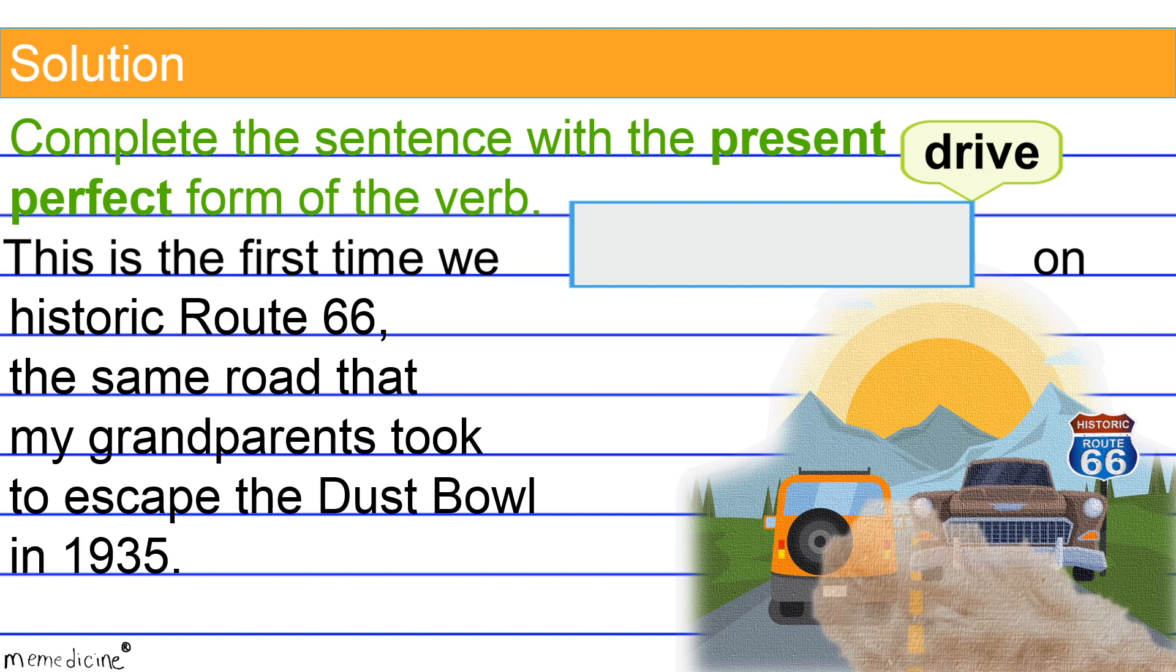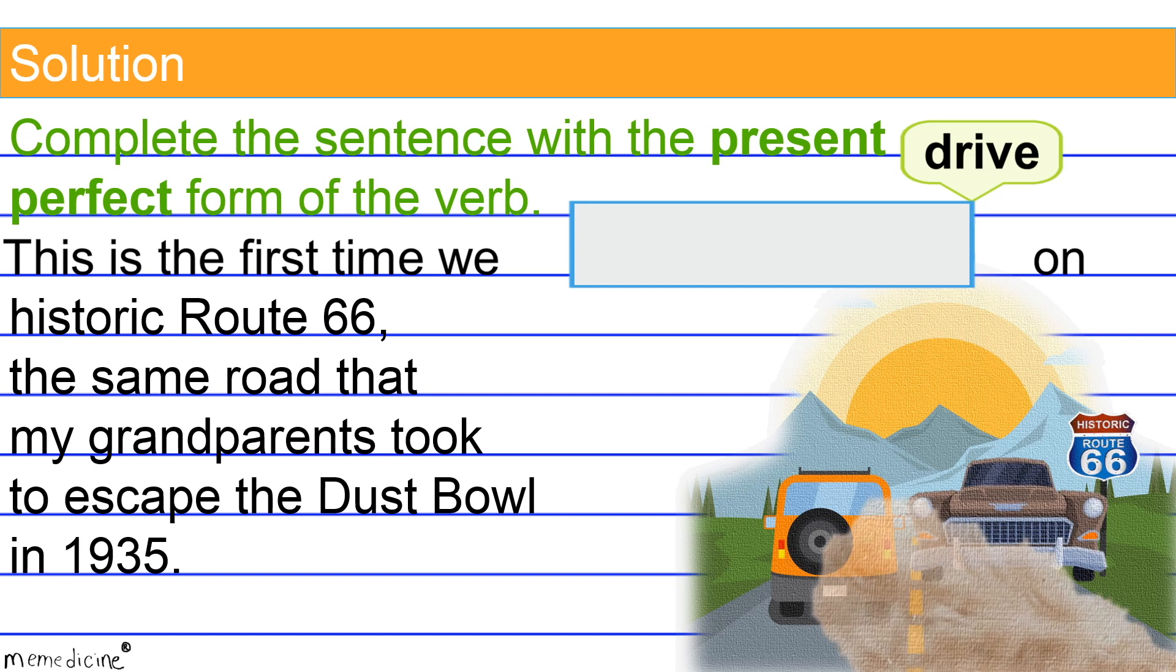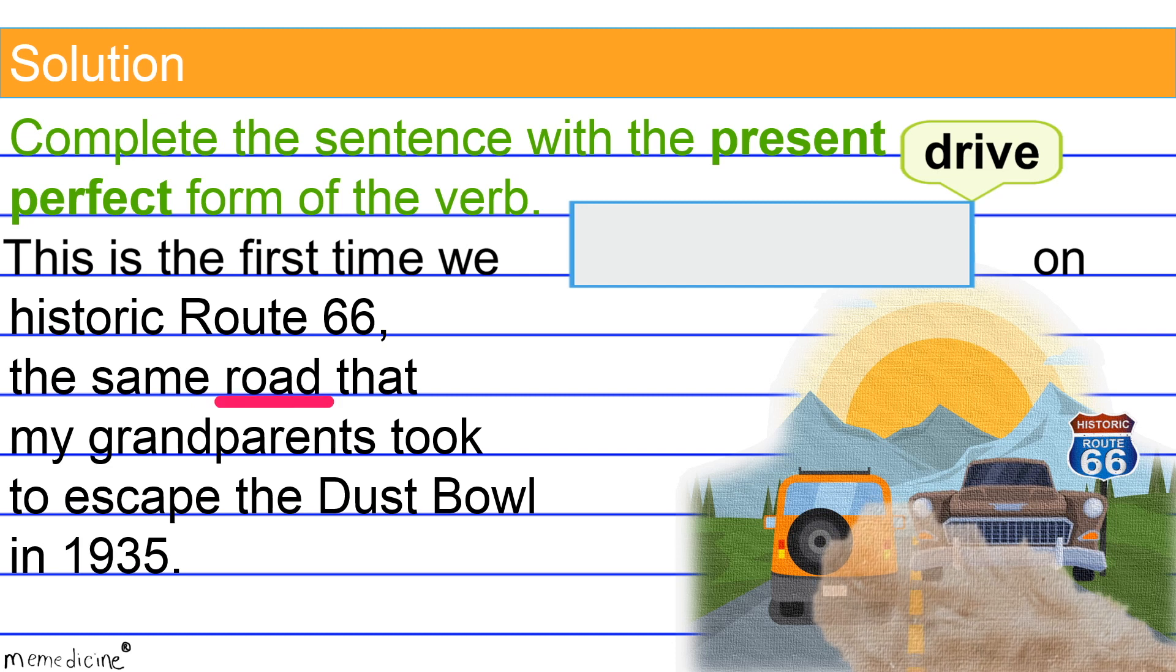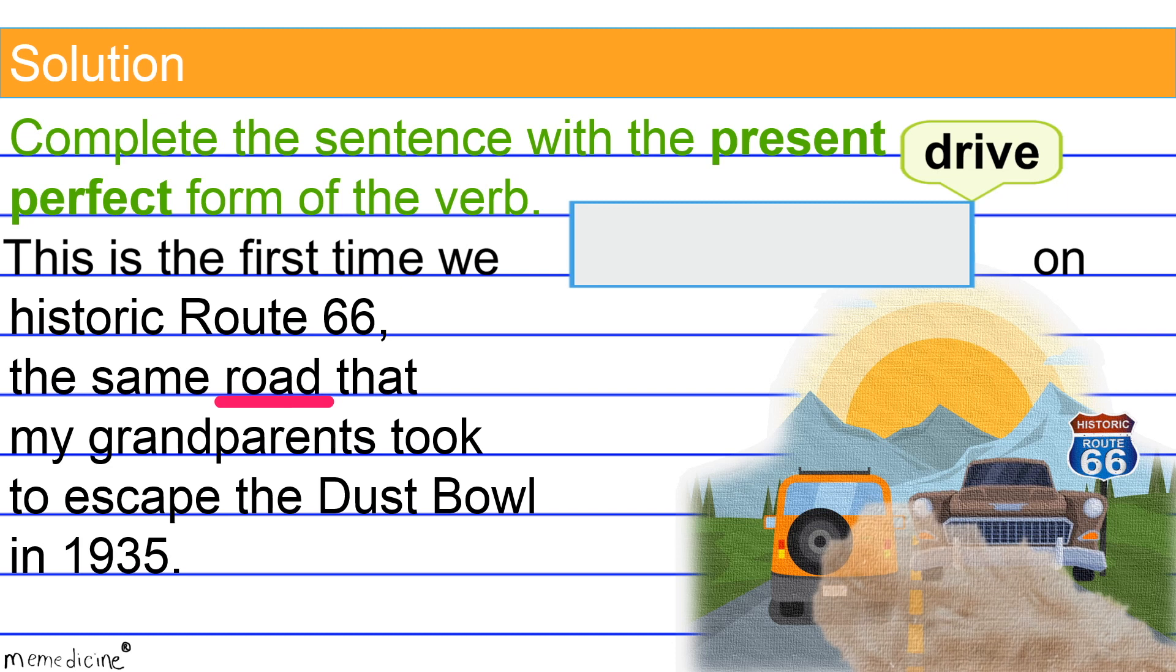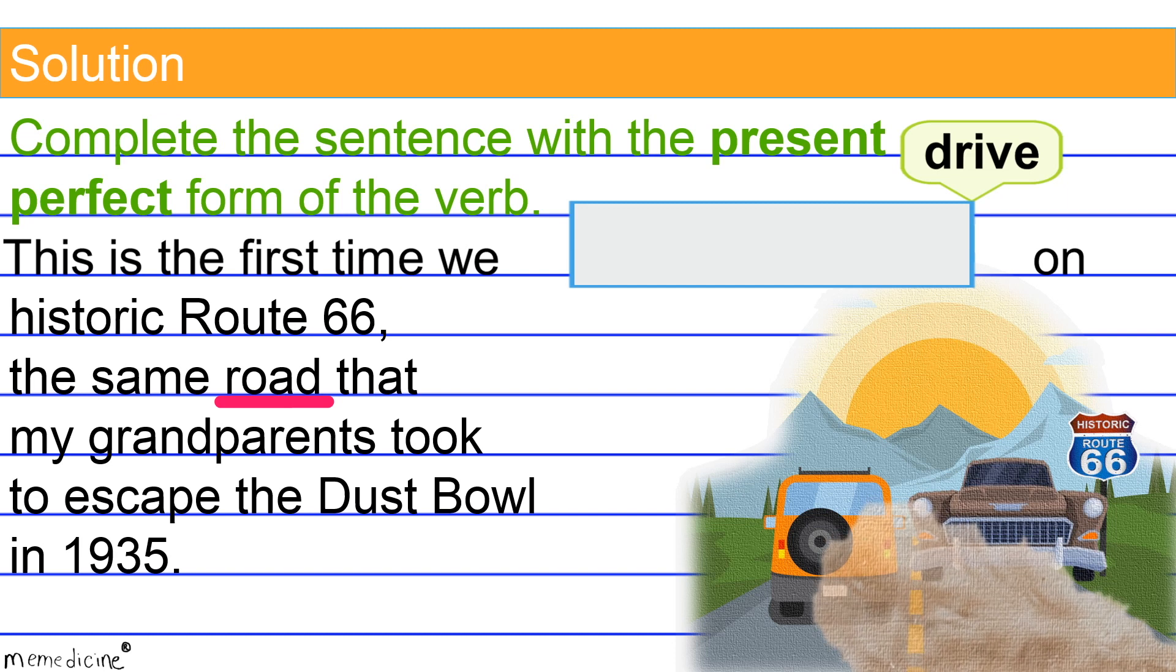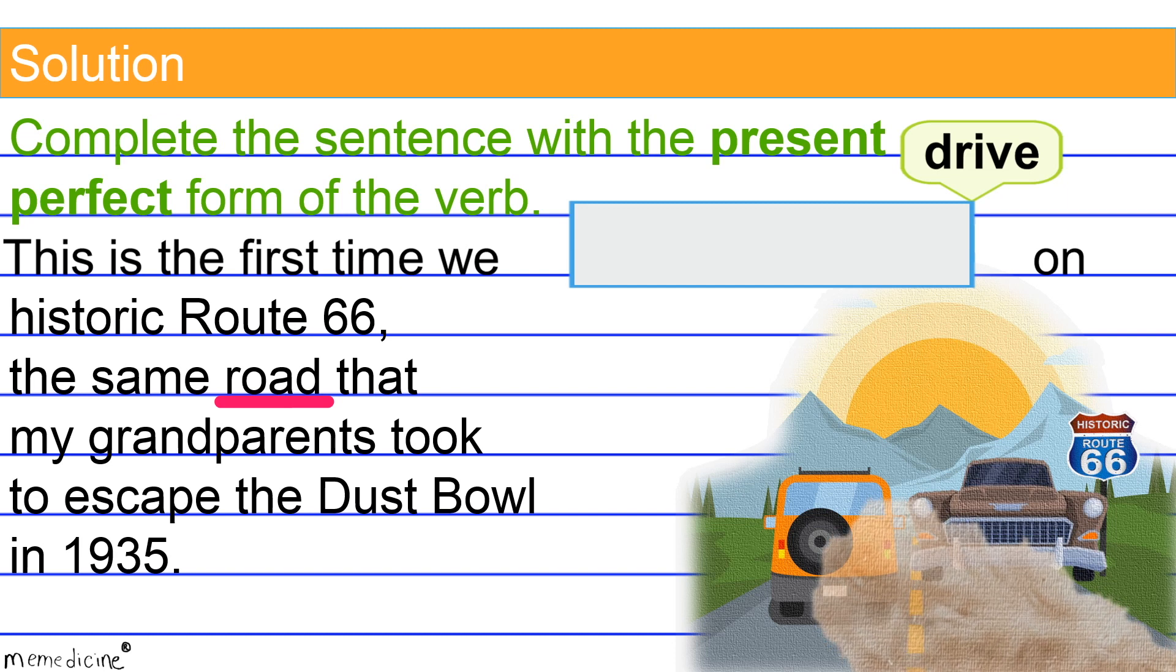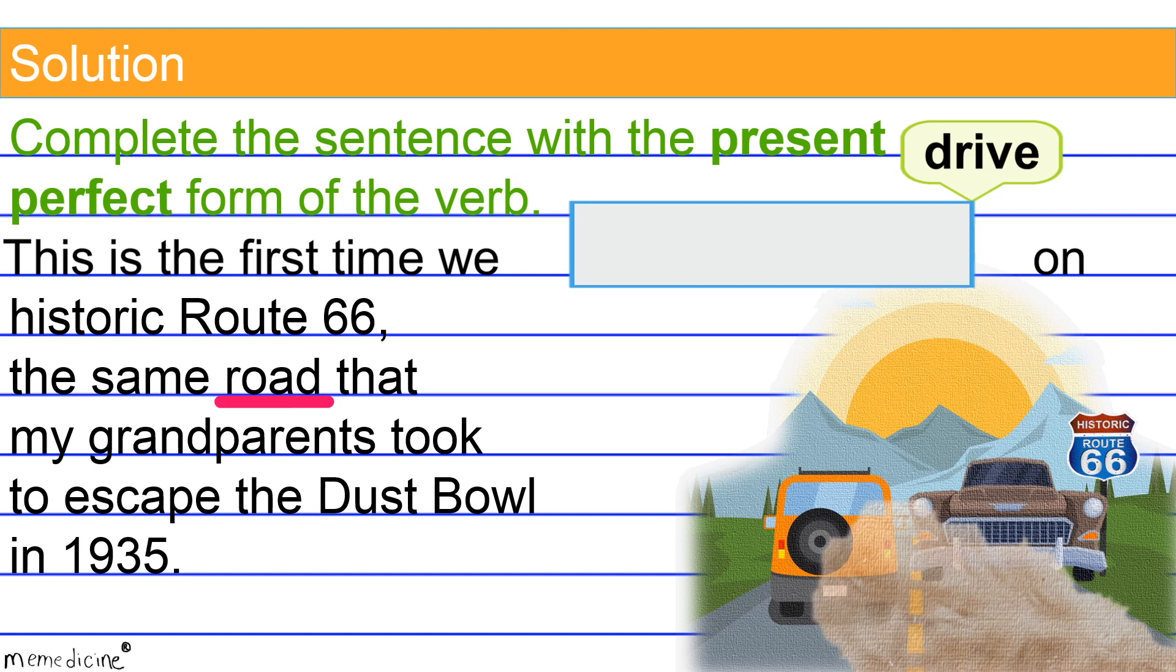And just in case you're wondering, an example of a singular third person subject would be the noun road. Obviously it's singular because only one road is being discussed. When communicating from a third person point of view, you're basically acting as a narrator. And you mention the person, place, or thing you are speaking of by name, or you discuss your subject with pronouns like he, she, it, or they.